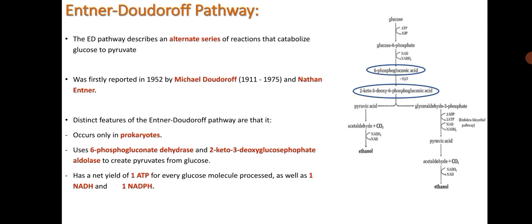Entner-Doudoroff pathway. The ED pathway describes an alternate series of reactions that catabolize glucose to pyruvate. It was first reported in 1952 by Michael Doudoroff and Nathan Entner. Existing features of the Entner-Doudoroff pathway are that it occurs only in prokaryotes and uses 6-phosphogluconate dehydratase and 2-keto-3-deoxyglucose phosphate aldolase to create pyruvates from glucose.